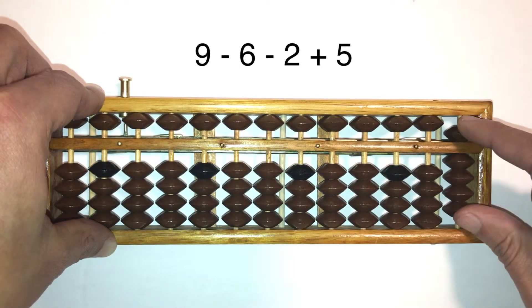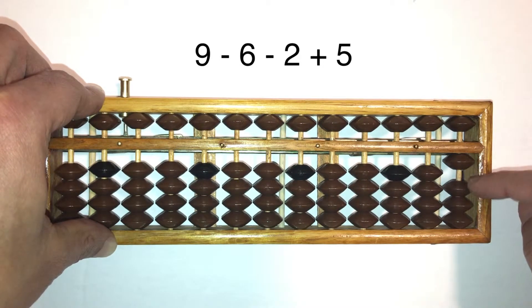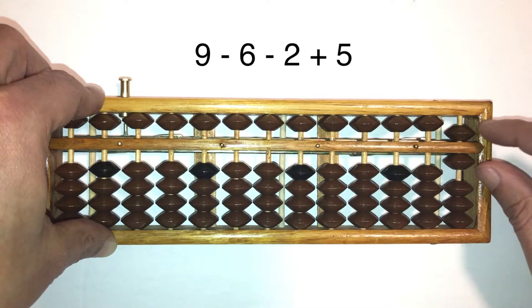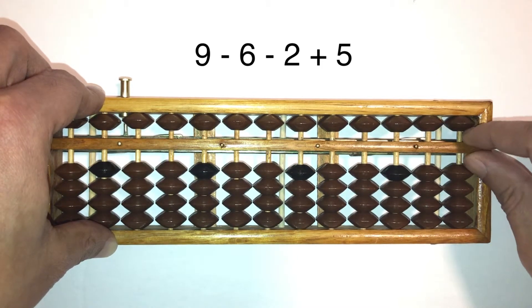Let's do this again: 9 minus 6 minus 2 plus 5. Answer is 6. See how that works? Alright.